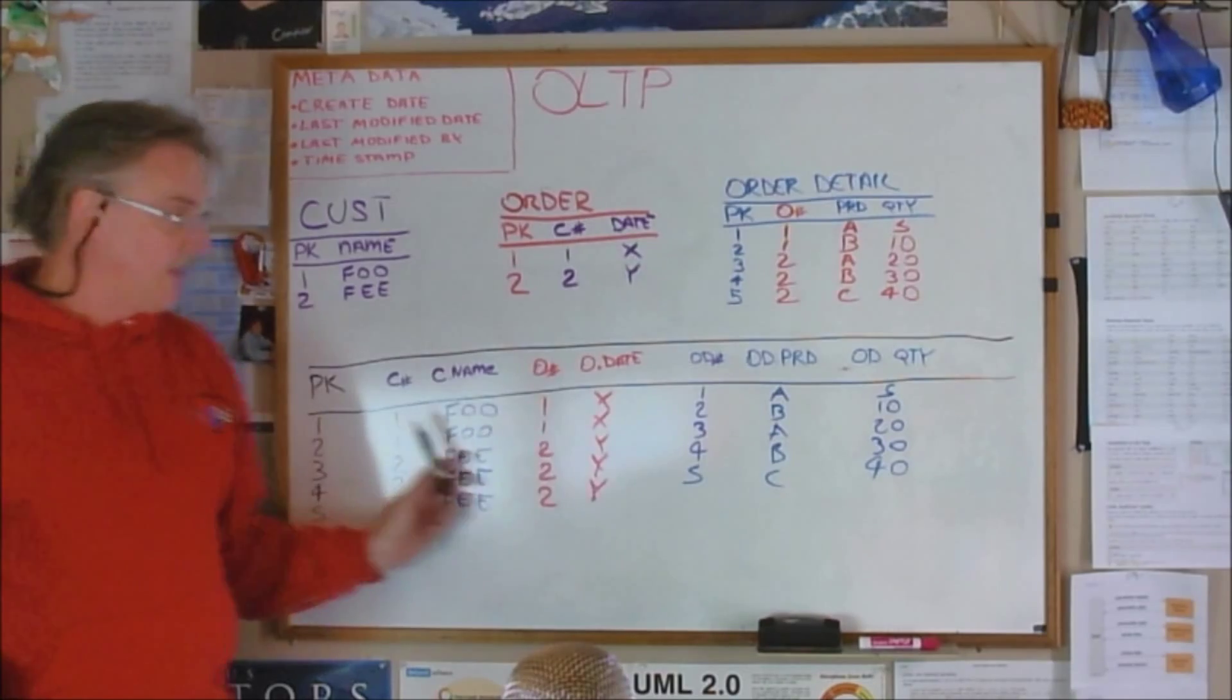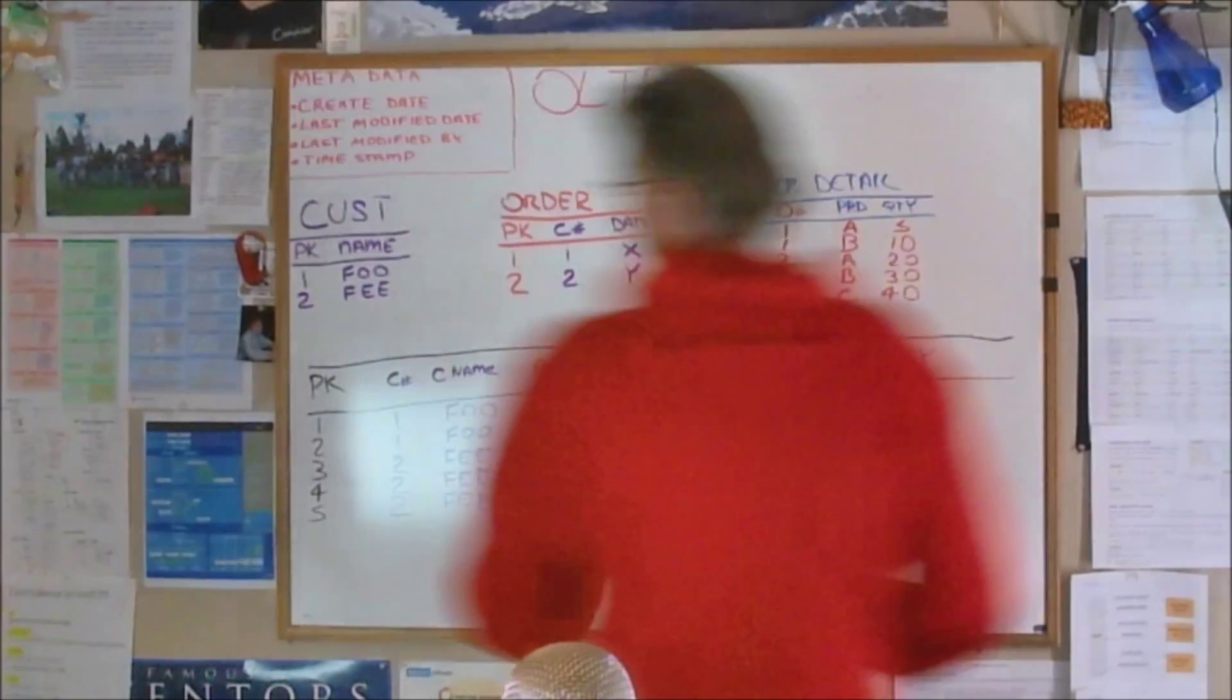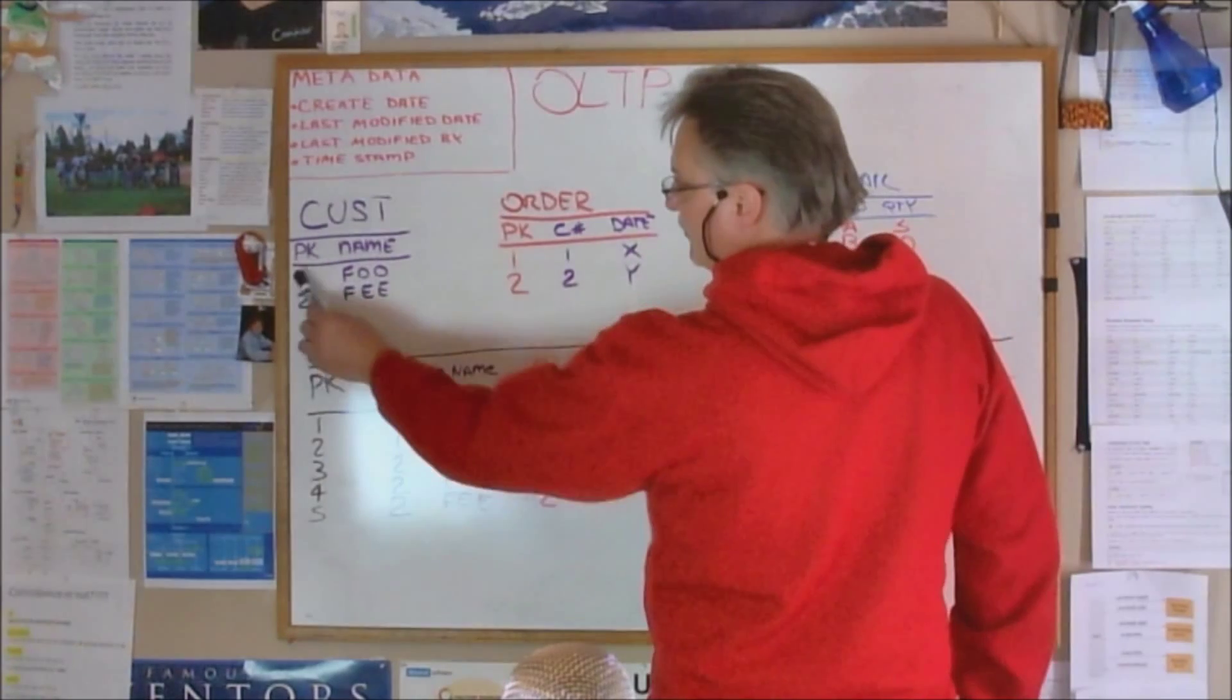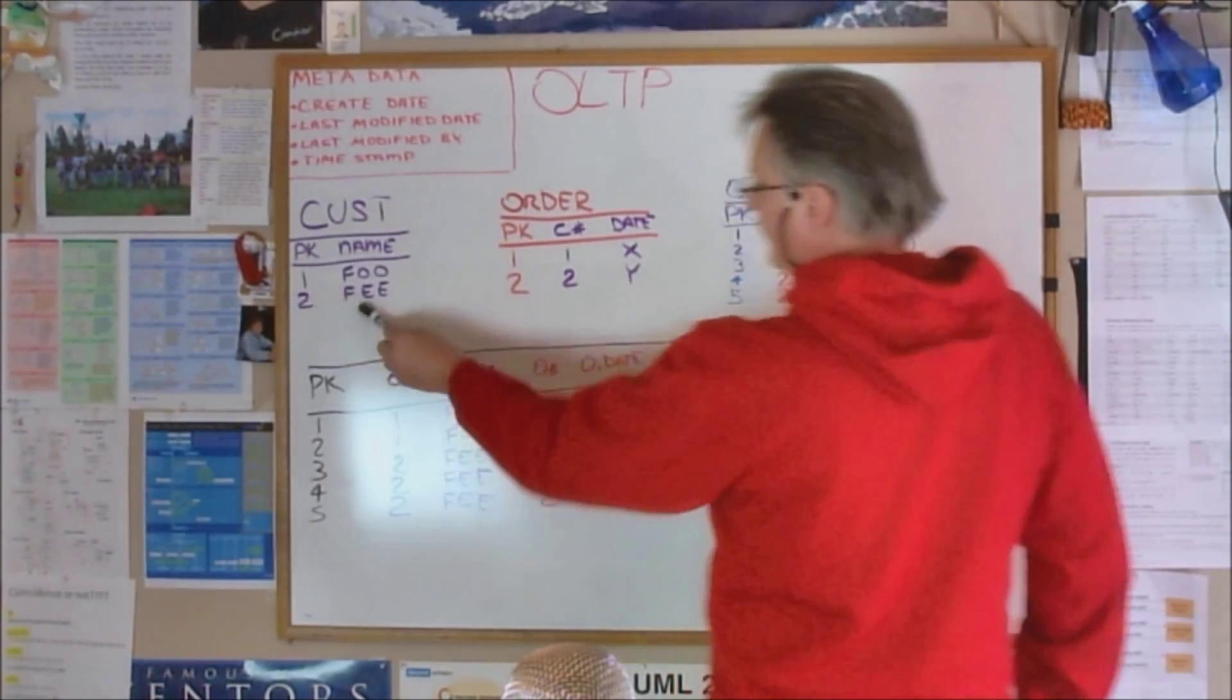Okay, so let's just go over it, shall we? You have a customer. We have two customers: foo and fee. Customer number one is foo, customer number two is fee.